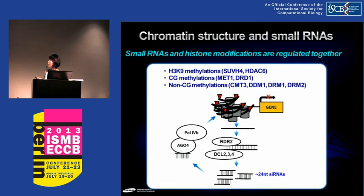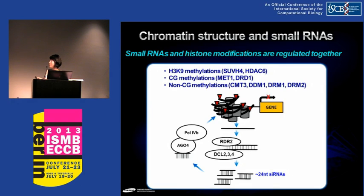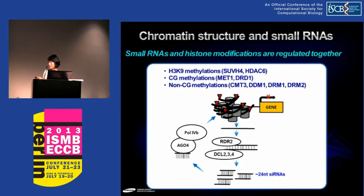In the heterochromatin region, the genomic DNA is highly packaged by high nucleosome formation. In this heterochromatin region, double-strand RNA is preferentially generated, and from this double-strand RNA, small interfering RNA is preferentially generated, which then preferentially interacts with H3K9 methyltransferases — the marker of heterochromatin — or DNA methyltransferases. This forms a feed-forward regulatory network, suggesting that small RNA, DNA methylation, and histone modification are all co-regulated for chromatin structure coordination.